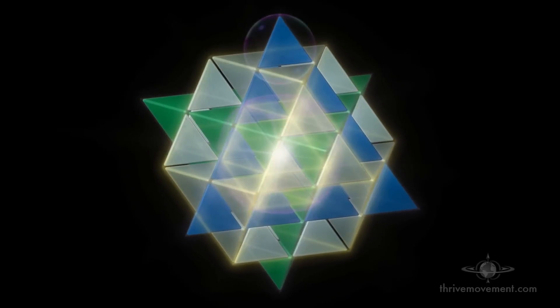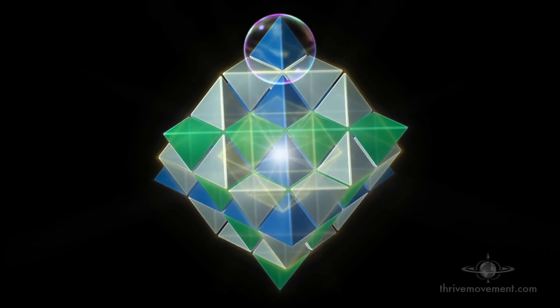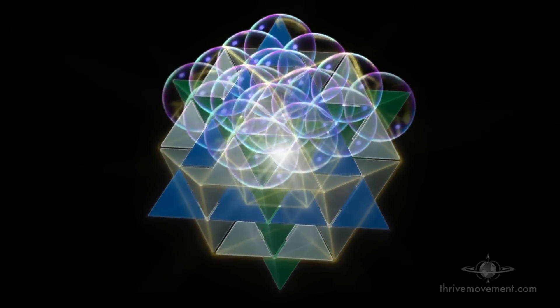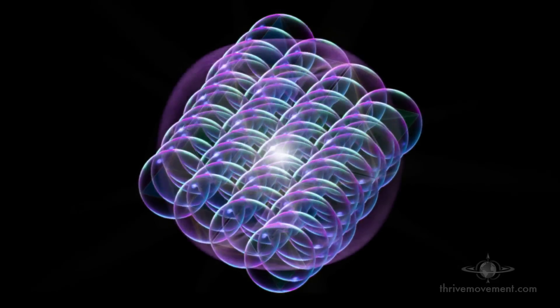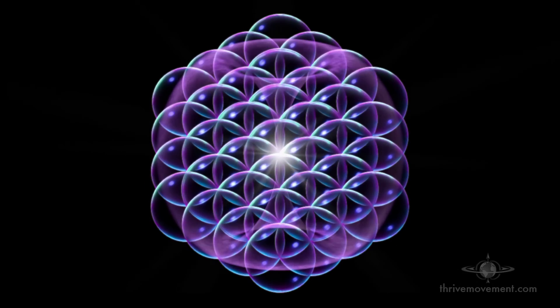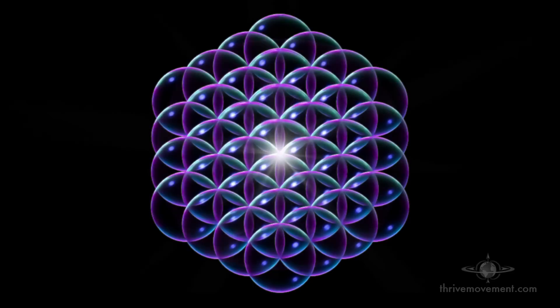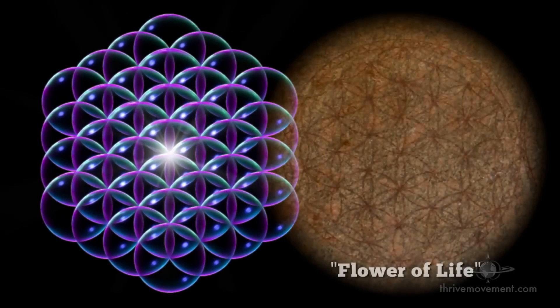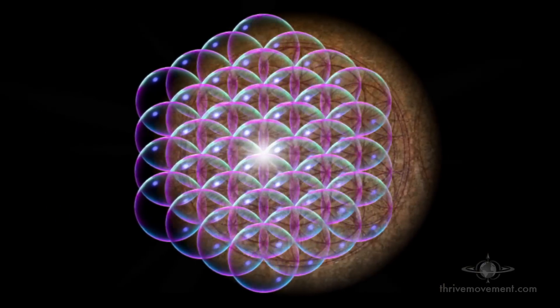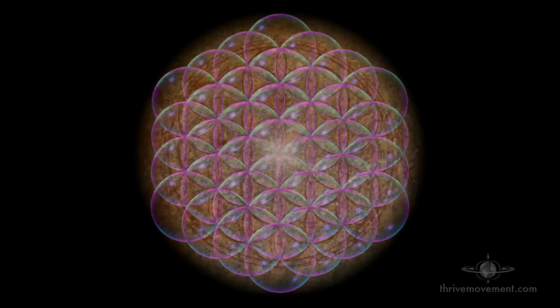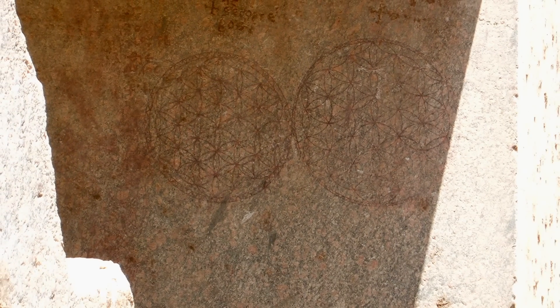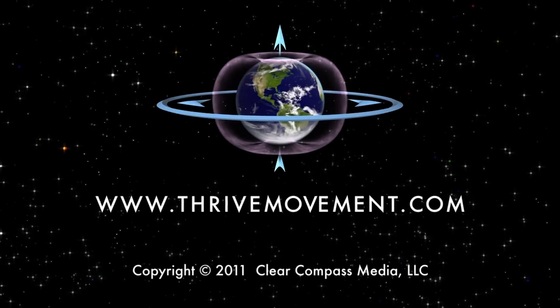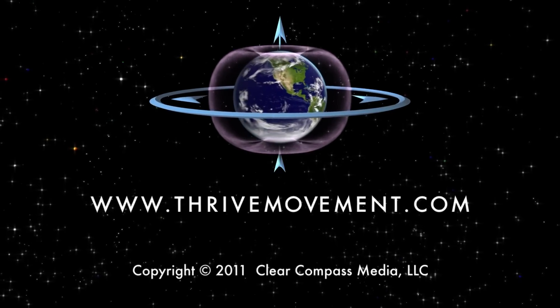If we then put spheres in representing the toroidal energy fields surrounding each of the pyramids, and then we drop away the pyramids, we end up with a matrix that is amazingly an exact overlay for the Osirian icon. A three-dimensional model of the same pattern that was burned into the rock wall of the Egyptian temple thousands of years ago.